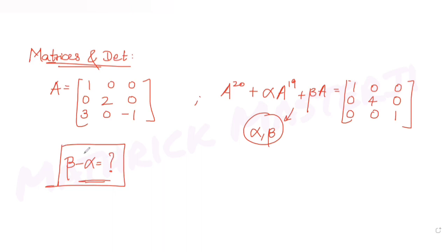Let's figure out how to solve this type of question. To use the given equation, I first need to find A raised to 19 and A raised to 20, so let's figure out what those matrices look like.